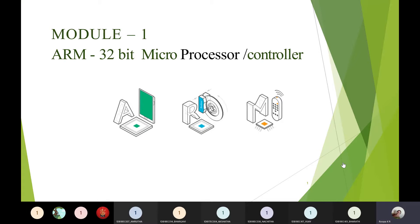We are going to start with the first module today. We have completed the 3rd, 4th, and 5th modules. Starting from today we cover the first and second modules. The first module is about ARM controller — the architecture of ARM, different families, different register sets, special function registers, and interrupts. In the second module we will learn about the different instruction sets of ARM.